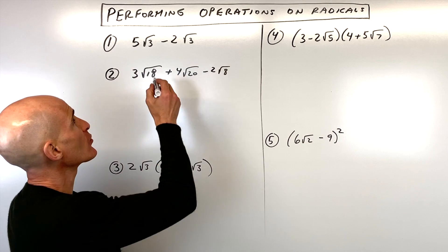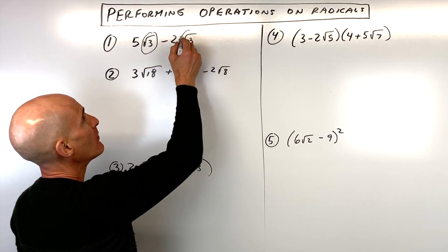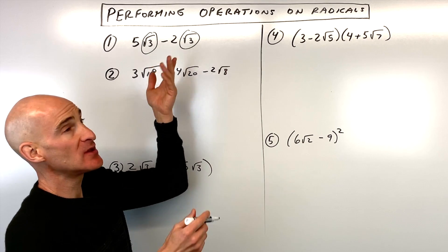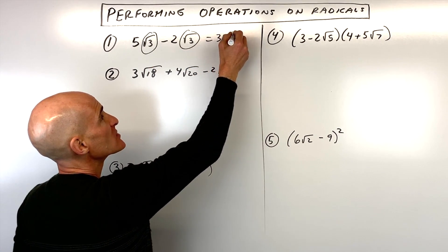How do we handle that? Well, you can see we're working with the same type of quantity. Both of them have square root of three. It's just that we have five of these minus two of these. That's going to equal three square root of three.